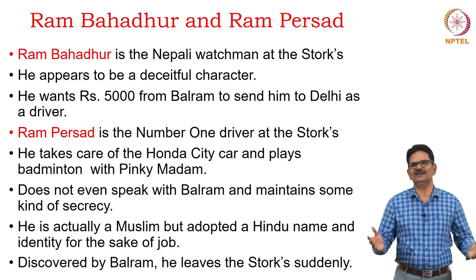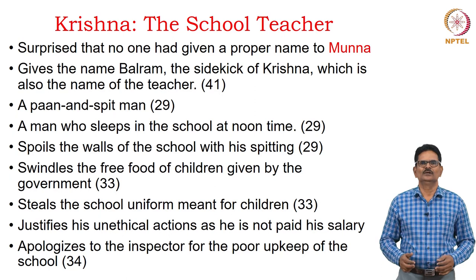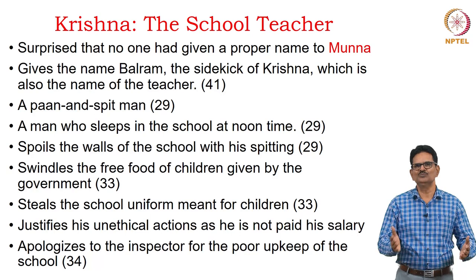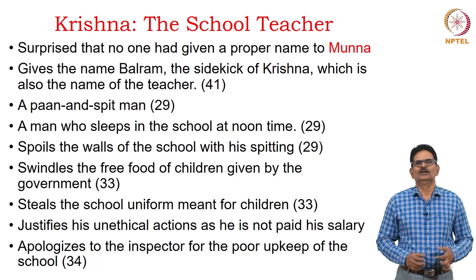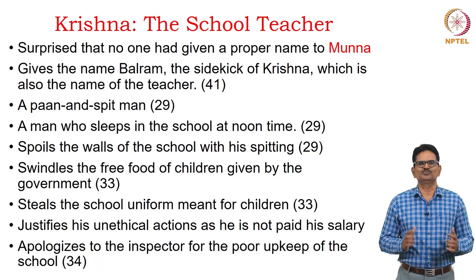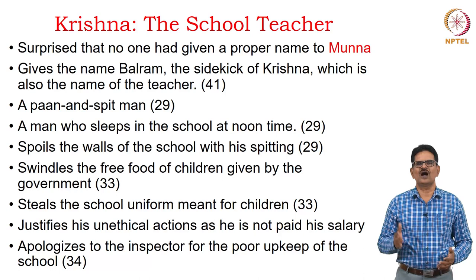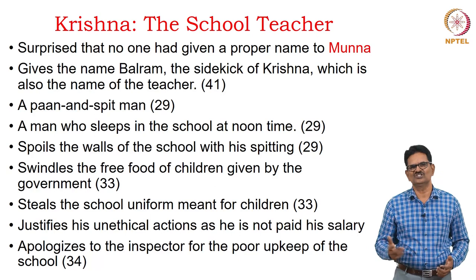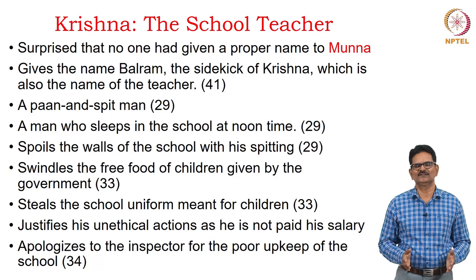Krishna, the school teacher of Balram, is surprised that no one had given a proper name to Munna, so the teacher gives him the name Balram — calling him the sidekick of Krishna, which is also the teacher's own name. The teacher is presented as a man chewing and spitting paan all the time, sleeping in school at noon, spoiling the walls with his spitting. He also swindles the free food given by the government to children and steals school uniforms meant for children, selling them for money. He justifies his unethical actions by saying he is not paid his salary by the government regularly.